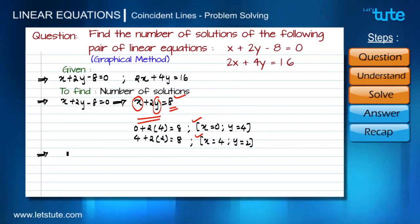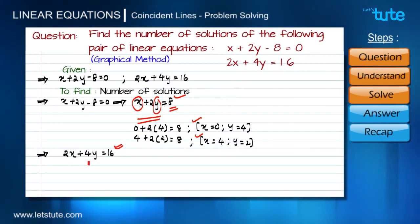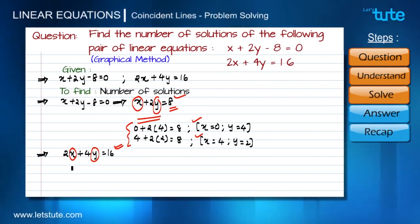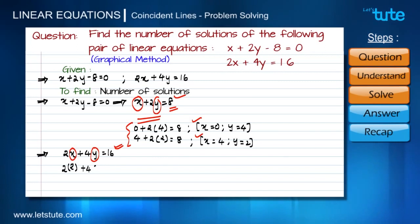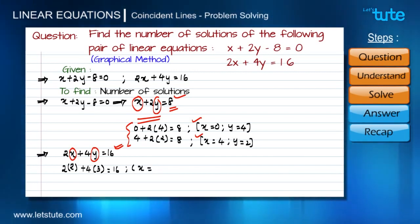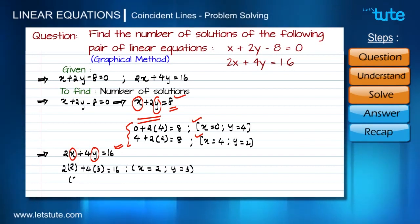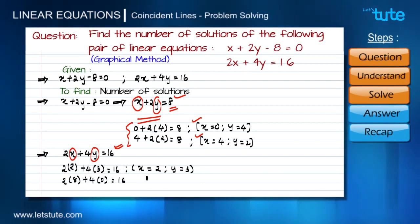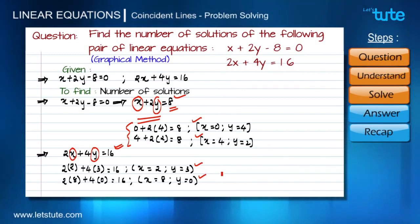Let us move to step three and take the second equation. We need to draw a line for this equation as well, so we require two sets of values for x and y. Taking x as 2, since it is 2x that gives 4, y must be 3 so the total becomes 16. The first set is x=2, y=3. For the second set, taking x as 8, y must be 0 so the total becomes 16. The second set is x=8, y=0.